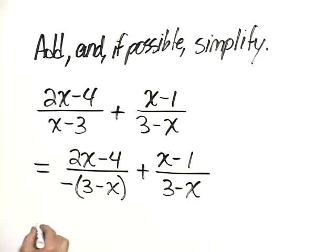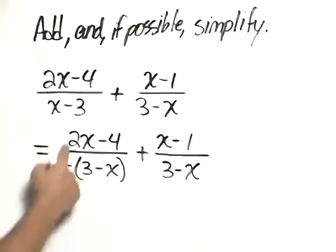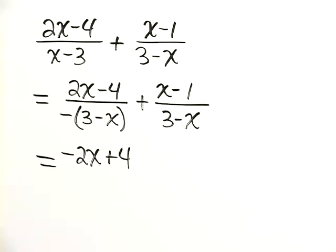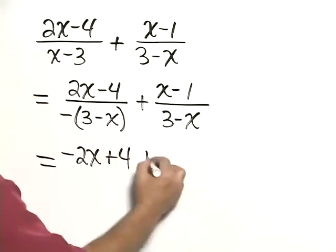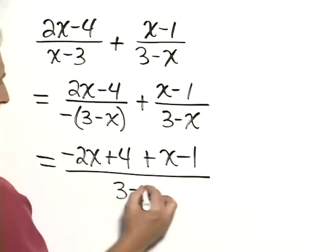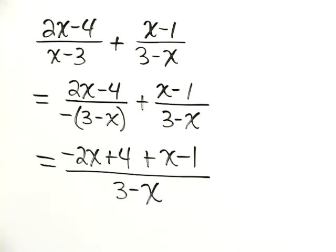So we have negative 2x plus 4, to which we add x minus 1, and all of that is over the common denominator of 3 minus x.